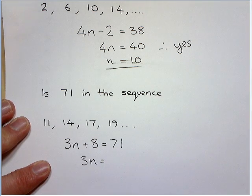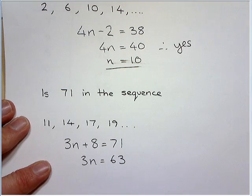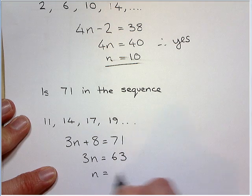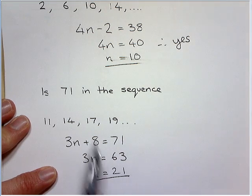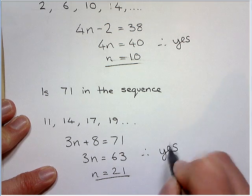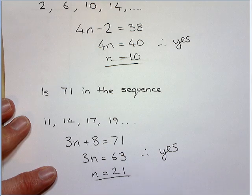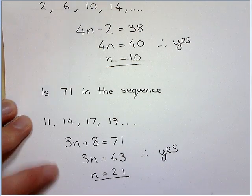So now we're going to solve this. So we get 63. And once again, this is in the 3 times table. It's 21. So it means it's the 21st number. So this one's also yes. So basically if it's not in the times table, it's not in the sequence. If it is, then yes it is. And that's it for sequences.